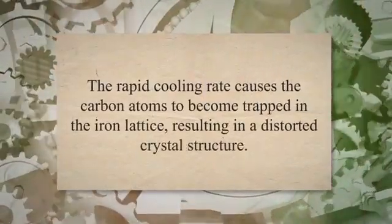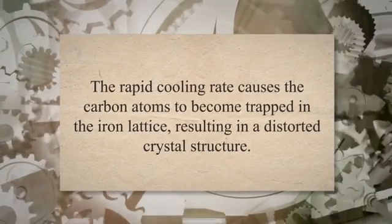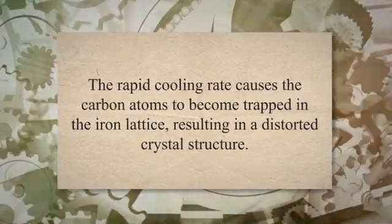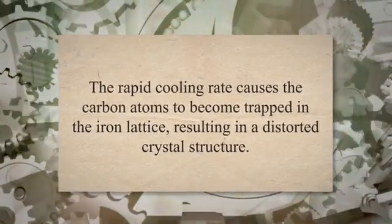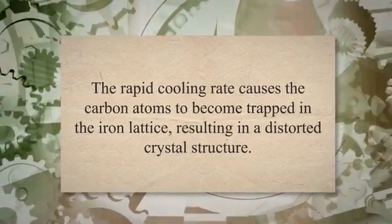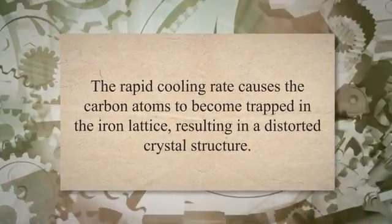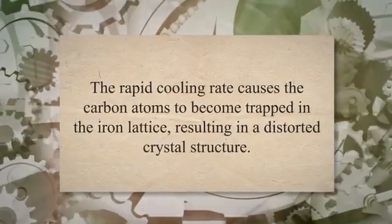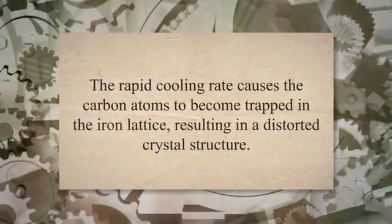One of the most notable properties of martensite is its high hardness. This property is due to the crystal structure formed during the cooling process. The rapid cooling rate causes the carbon atoms to become trapped in the iron lattice, resulting in a distorted crystal structure. This distortion makes it difficult for dislocations to move through the material, which increases its hardness.